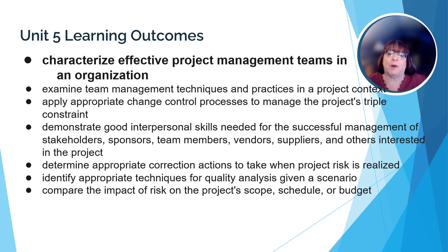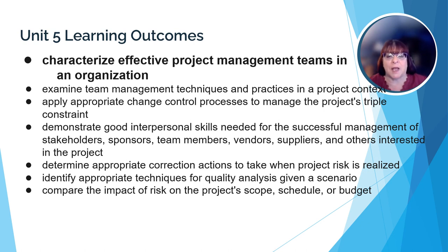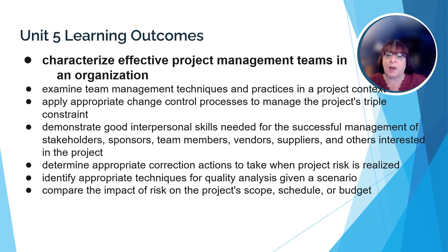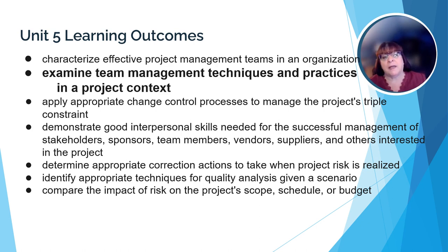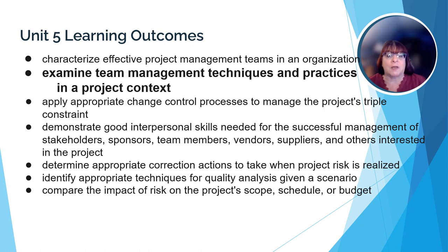There are a number of learning outcomes for Unit 5. The first one is all about creating an effective project team. Managing a successful project is not just about getting to the finish line — it's about how you can assemble and work with a team who has to get the project there as efficiently as possible. Understanding how teams work together and putting processes in place to facilitate communication and collaboration is going to be a big factor in keeping a project working within the triple constraint.